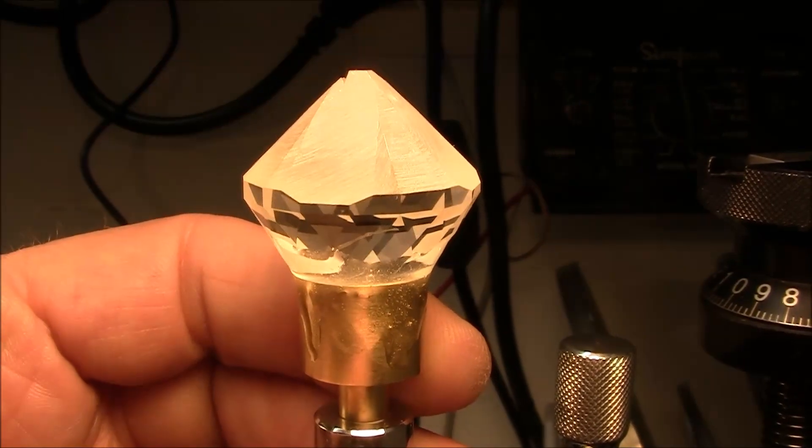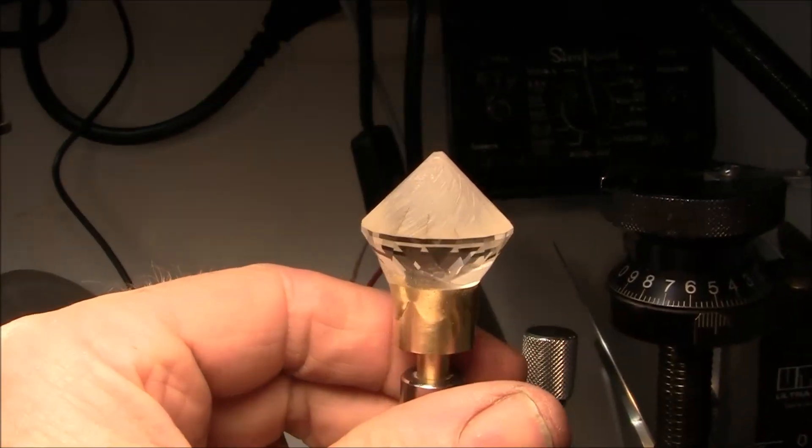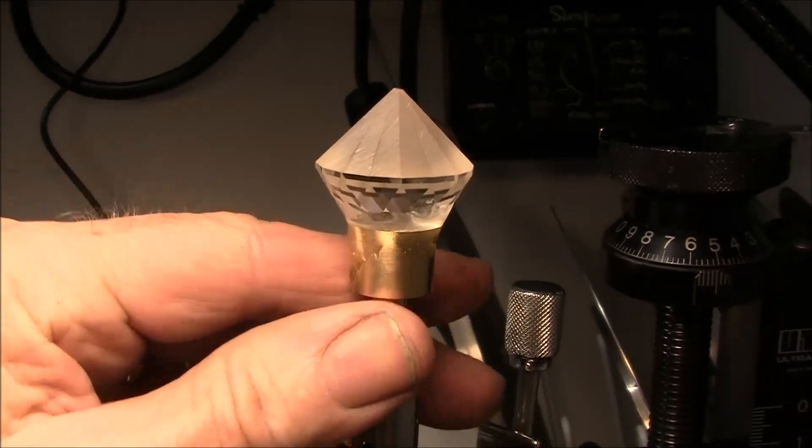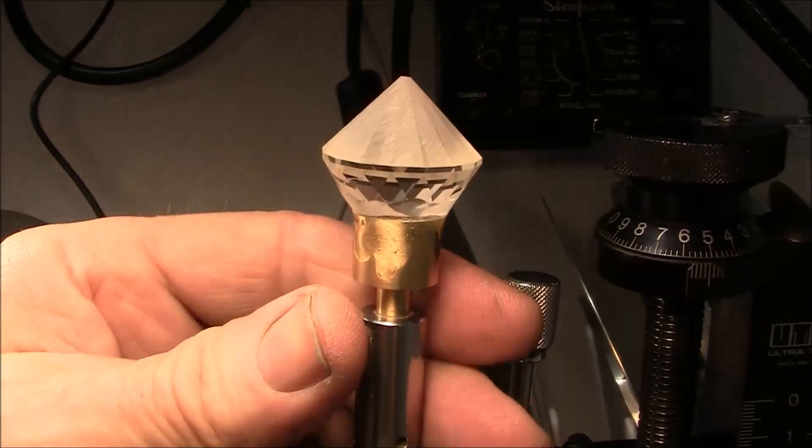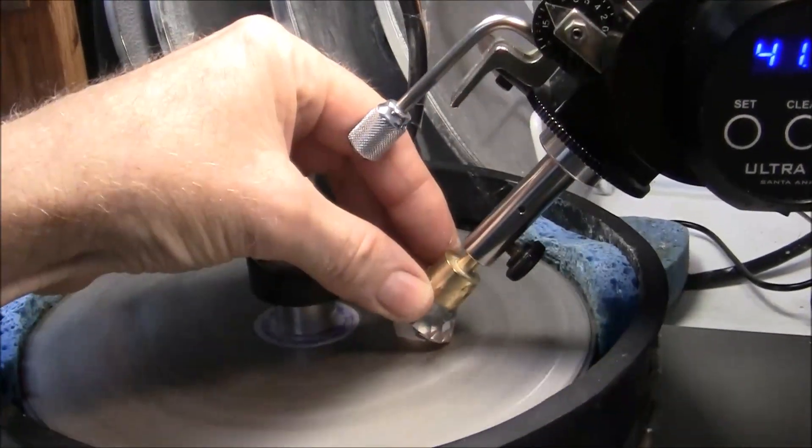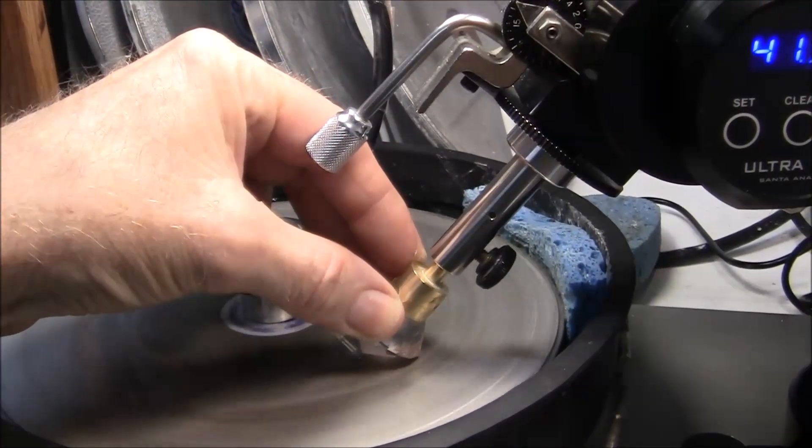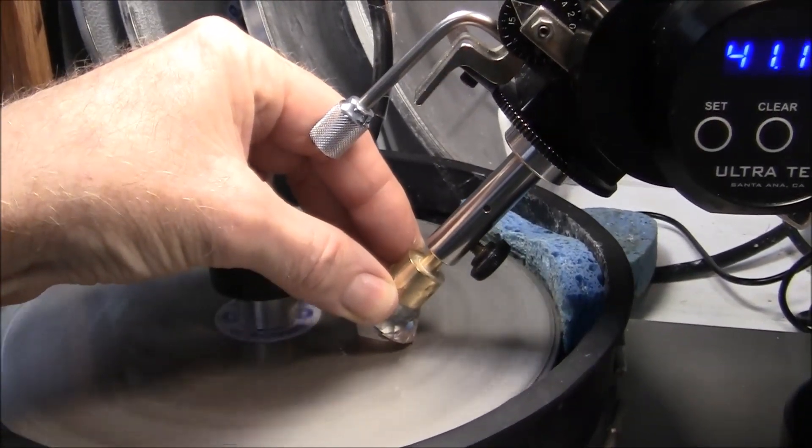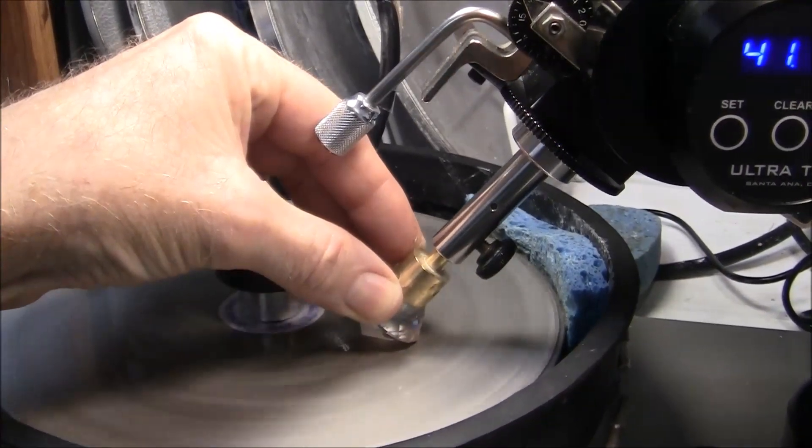I'm getting very close to the size, the girdle thickness that I want. I've gone all the way around the stone cutting all of those first facets. Here, I'm continuing on. This should be the next tier of facets, I believe. I think there's five tiers on the crown.